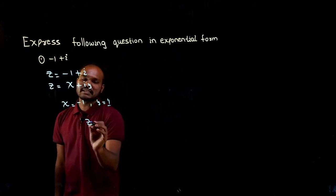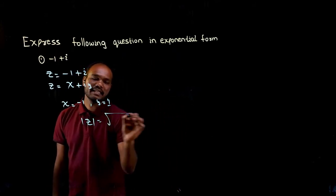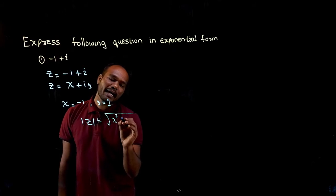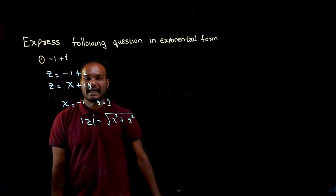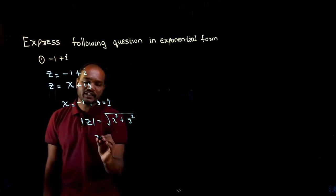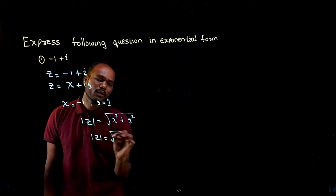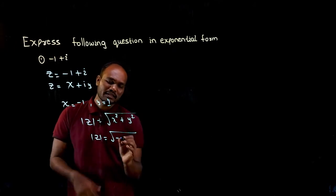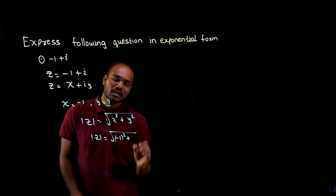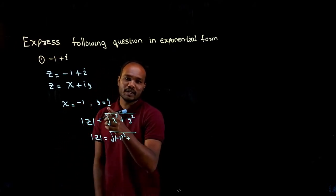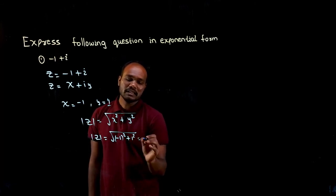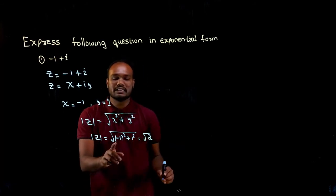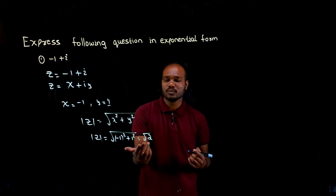To find modulus, that is modulus of z, that is equal to √(x² + y²). So let's substitute it. So modulus of z is what? Root of -1. So just have to take modulus or you just have to take the value. So let's, it doesn't matter a lot here. So -1 square. What is y value? 1. 1 square. How much is that? √2. 1 square is 1, 1 + 1 is 2. So √2.